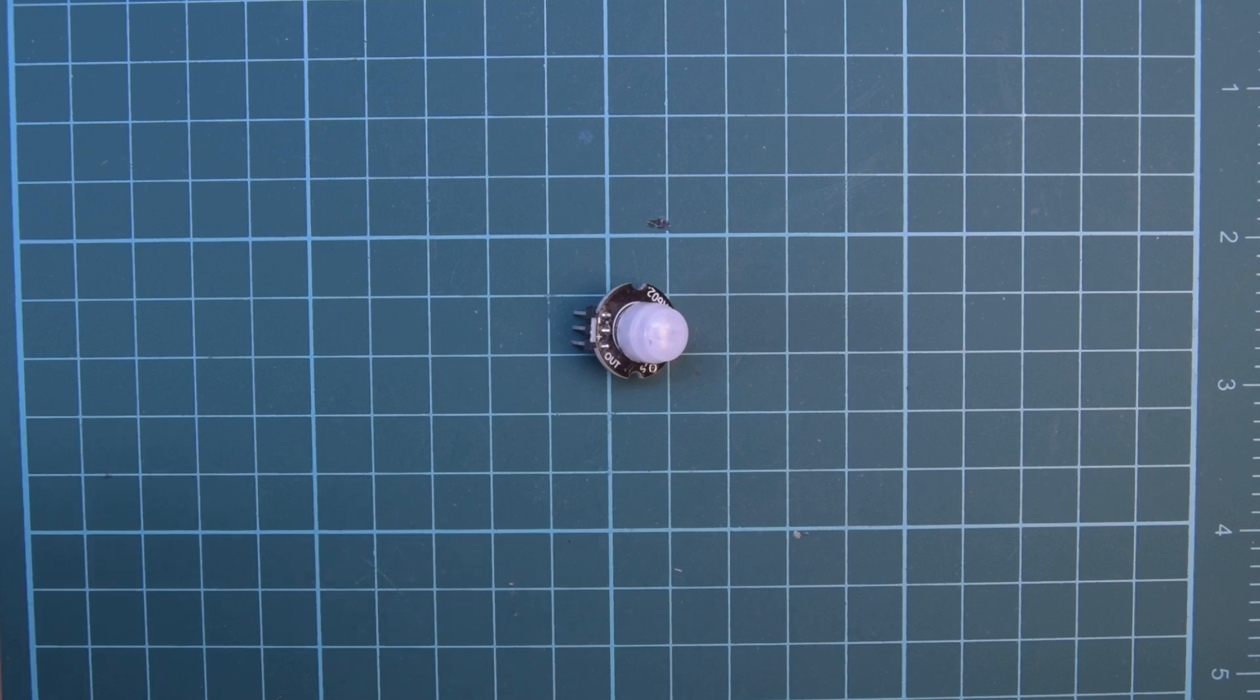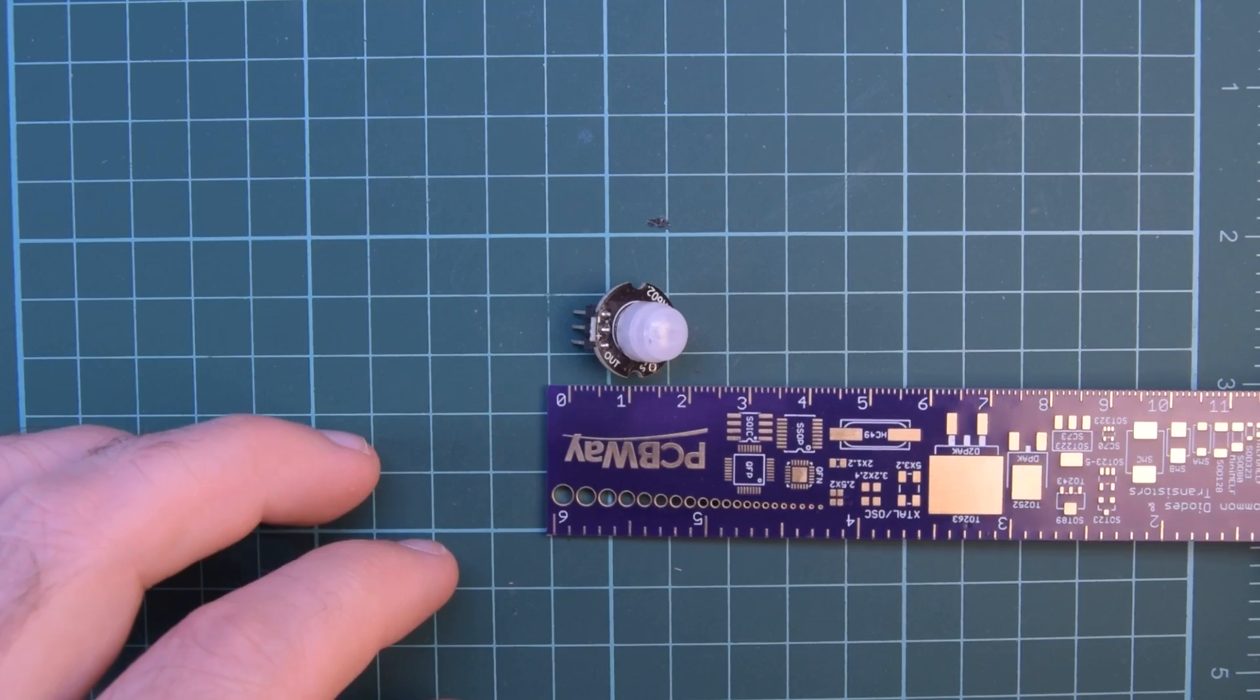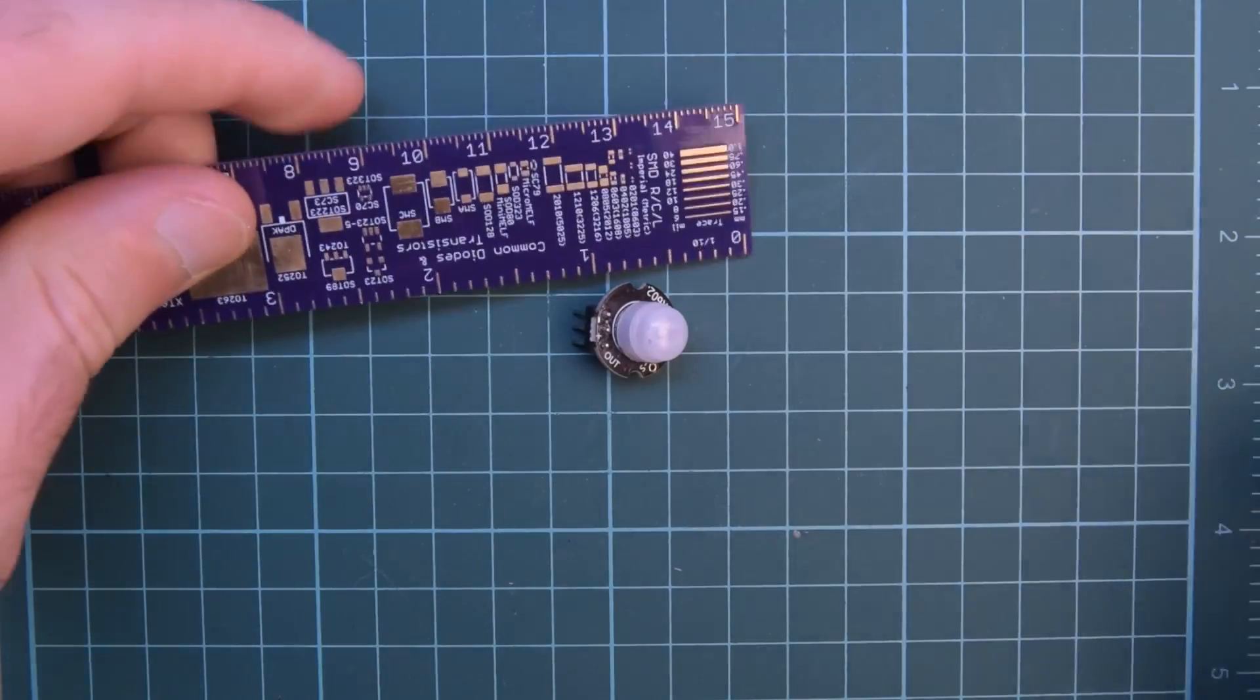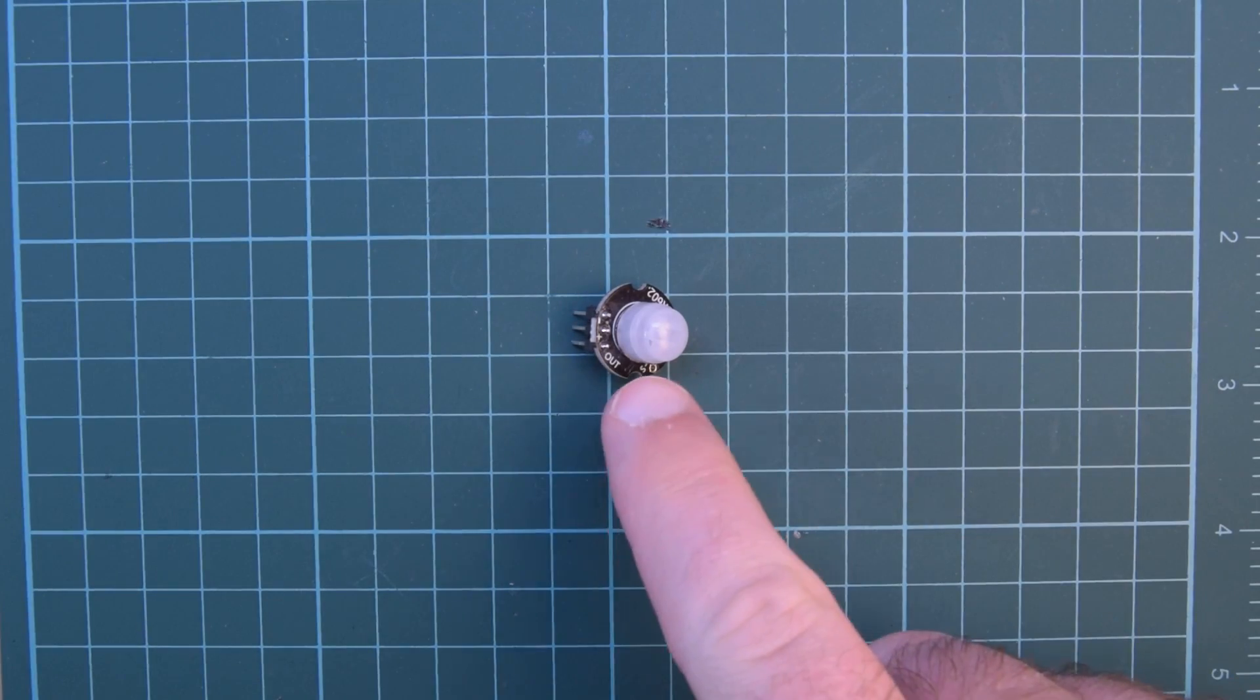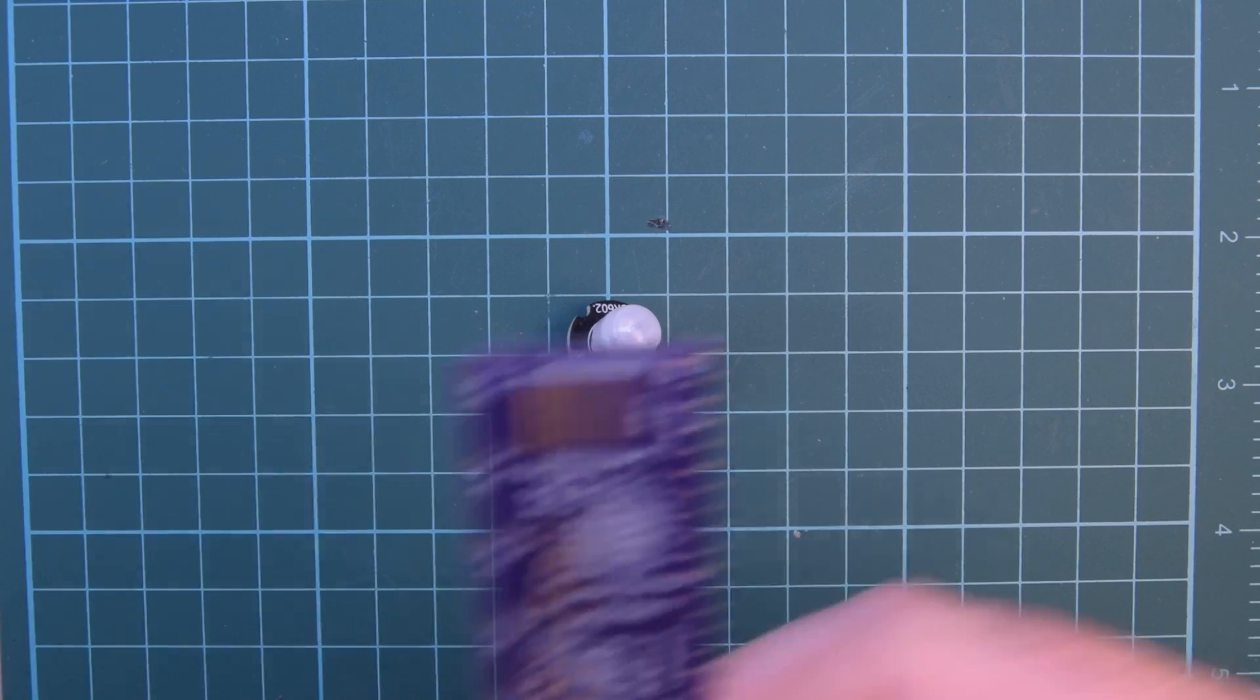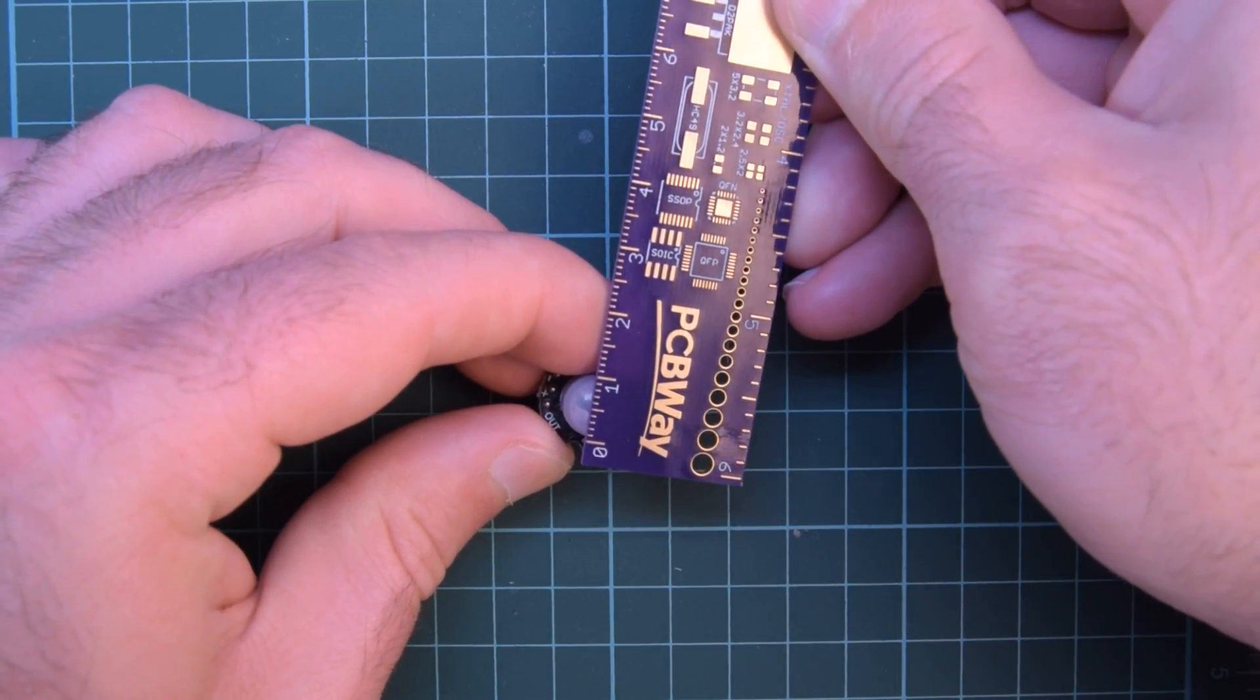This one here is absolutely tiny if I bring in a ruler here. There we go in the metric and imperial. Absolutely tiny. I think they say that this middle section is about 8 mils across. Very small.